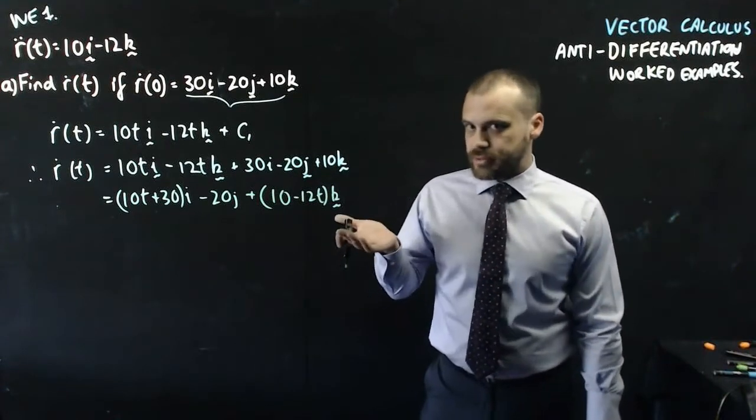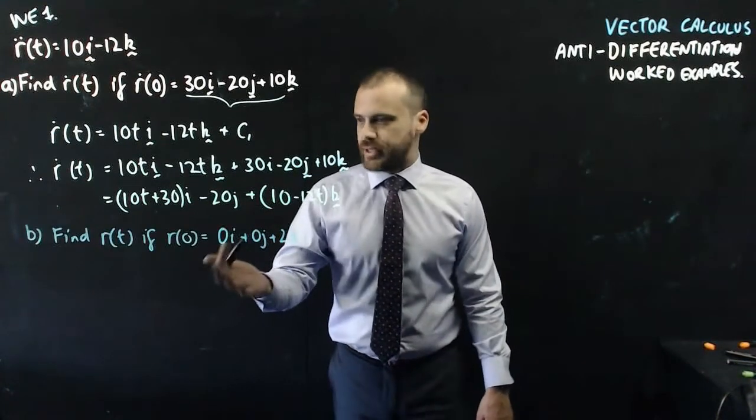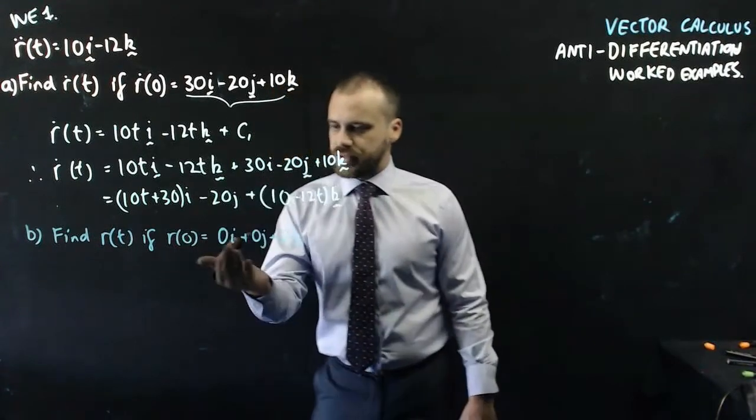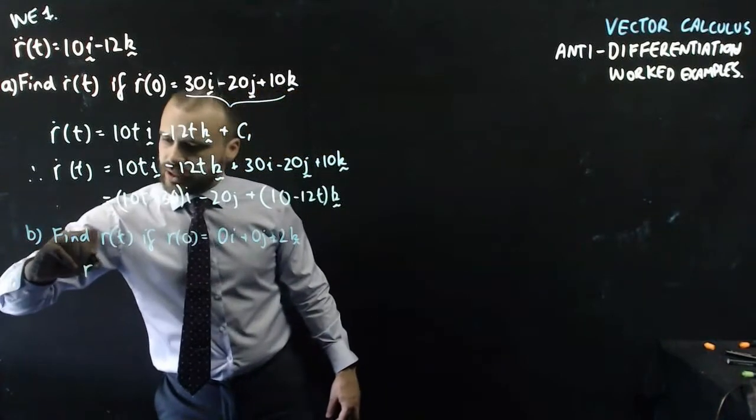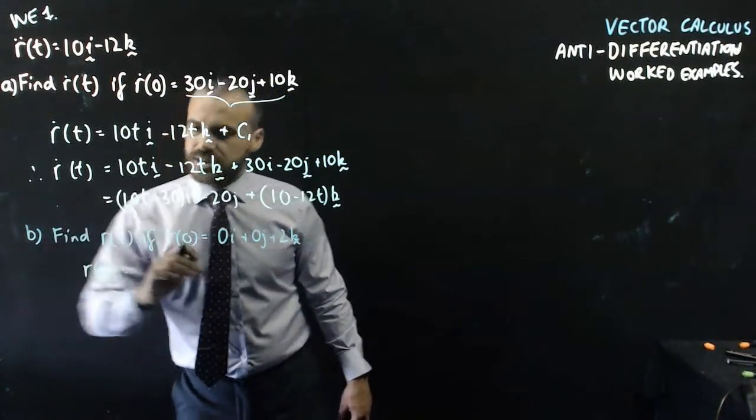Now of course we can go one step further with this. And now we can find r with respect to t, if we have some sort of initial or some other value. But we'll get to those ones in a second. All right, so that's going to be simple. r with respect to t equals,